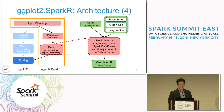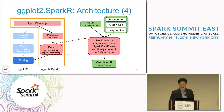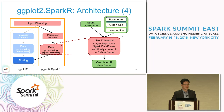With the Spark data frame as input, and with the parameters, graph type, and layer options extracted from the parameter extraction stage, the data processing uses 12 internal stages to process the Spark data frame. It is then converted to an R data frame, which is passed to the plotting stage for drawing.